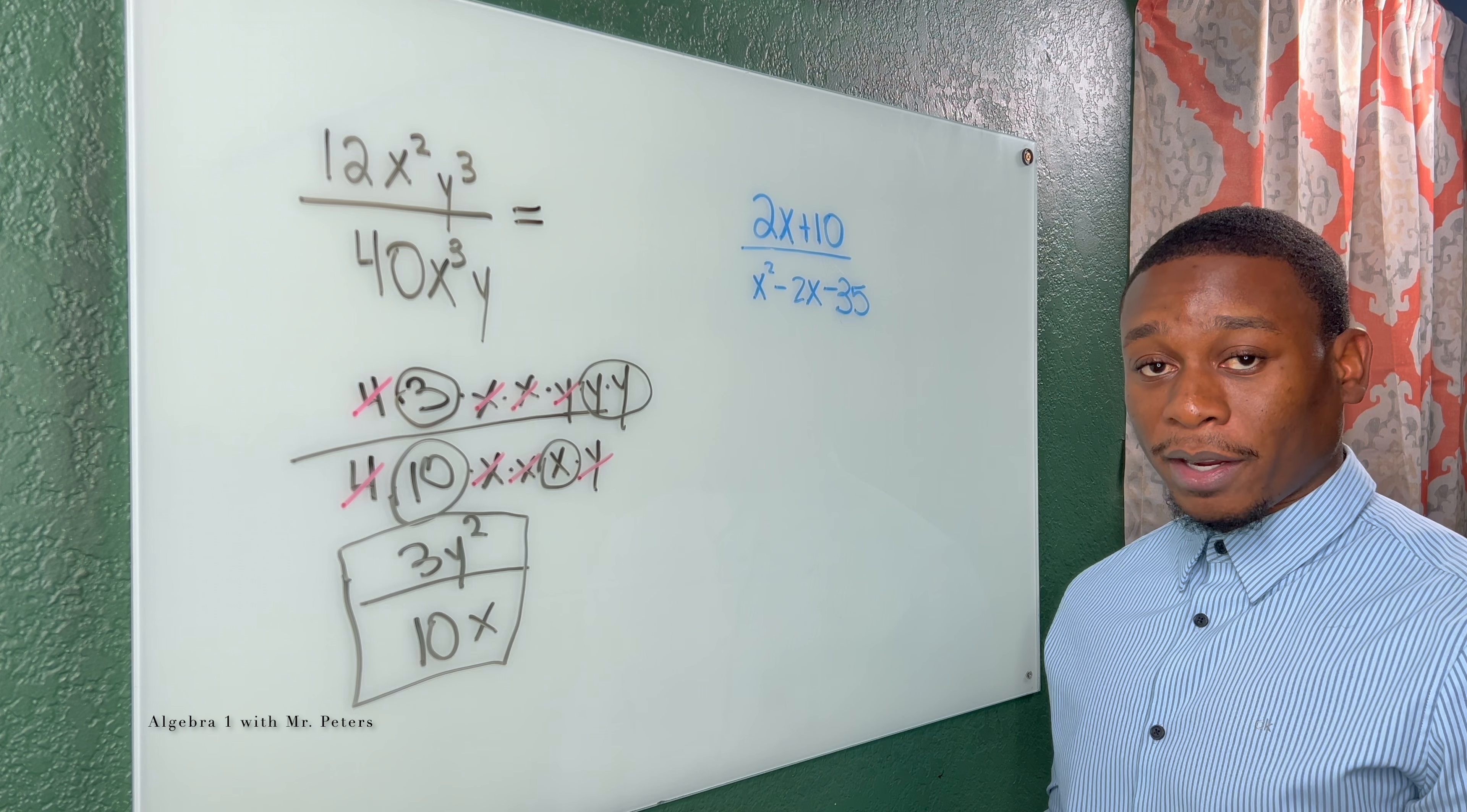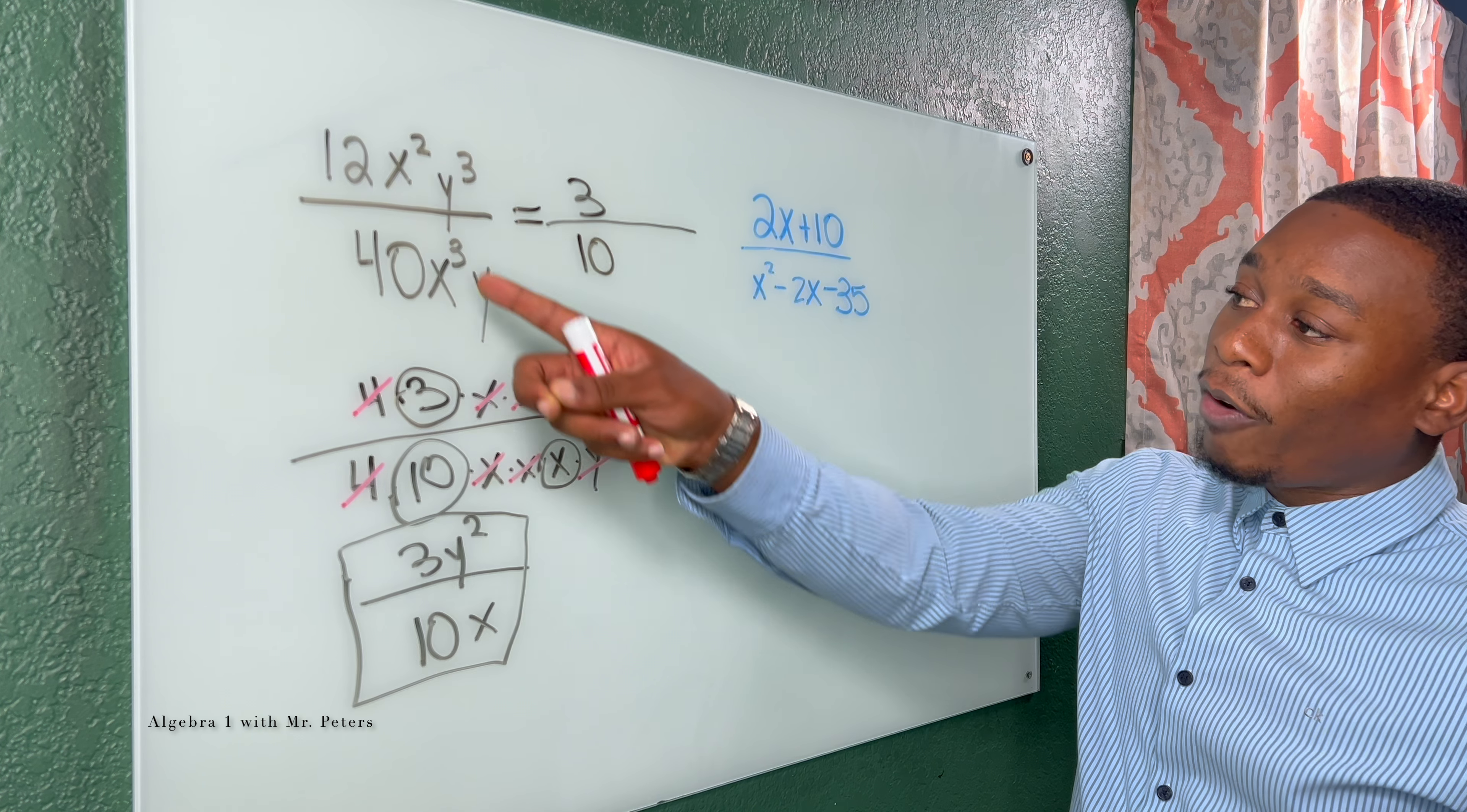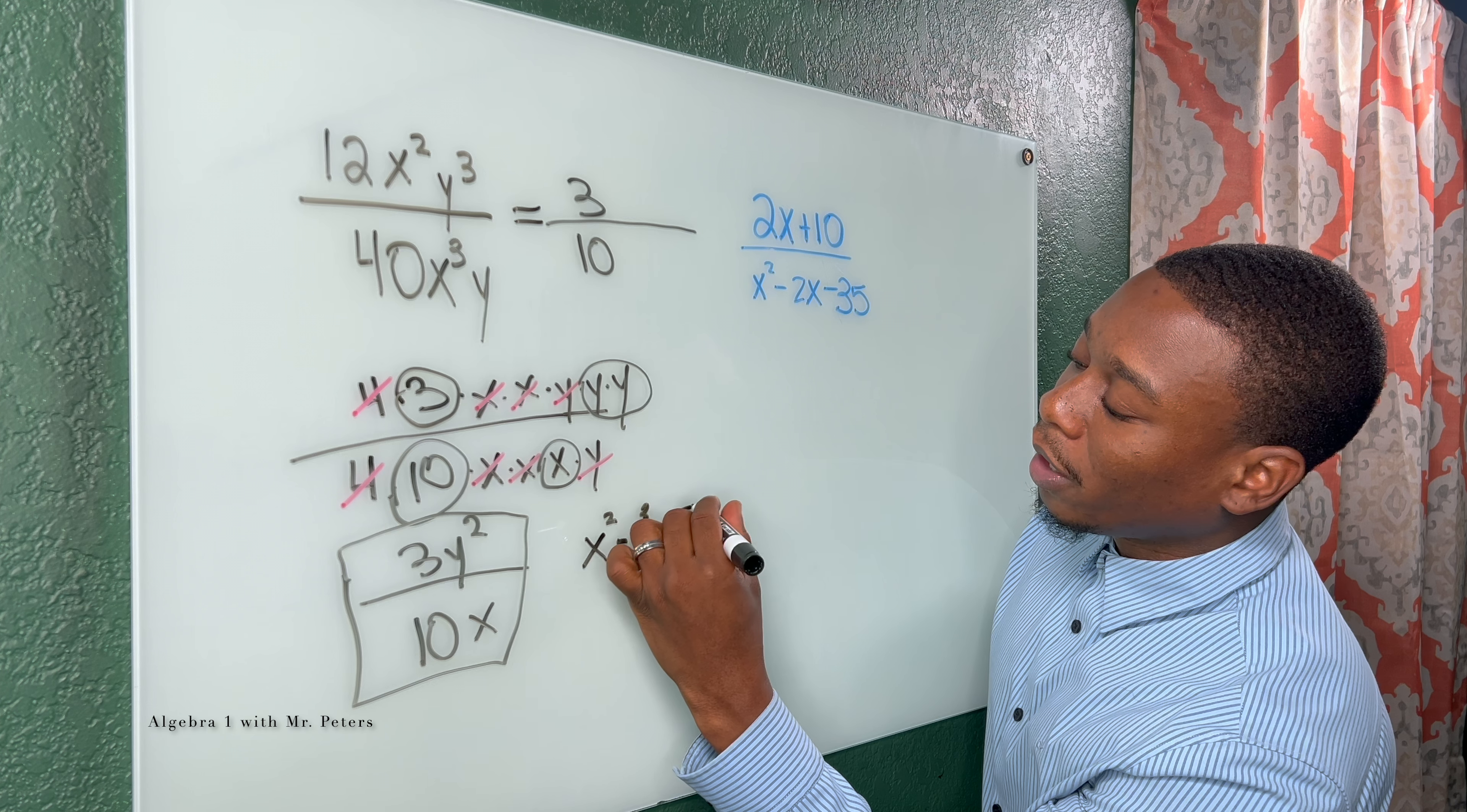I know my highest common factor is 4. So when I divide 12 and 40 by 4, I'm going to have 3 over 10. Now when we look at the exponents, remember we subtract bottom from top. So we have x squared minus x to the third power, which gives us x to the negative 1.